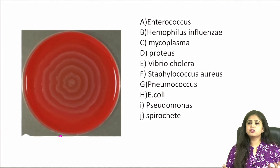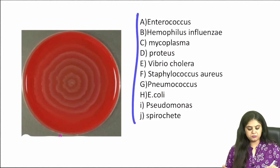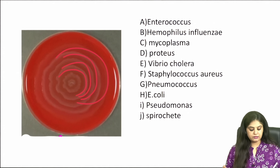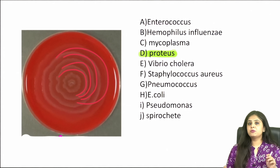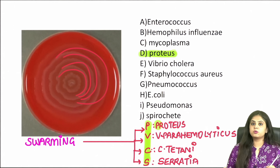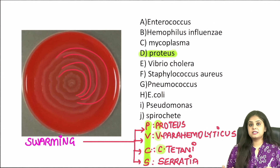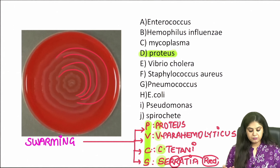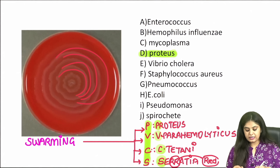The next question shows the classical concentric growth pattern — the swarming motility. You would want to match it with Proteus, but remember it is not specific to Proteus alone. Swarming motility is shown by: Proteus (most commonly), Vibrio parahemolyticus, Clostridium tetani, and Serratia. Remember, Serratia produces a red color pigment, which is also a previous year question.